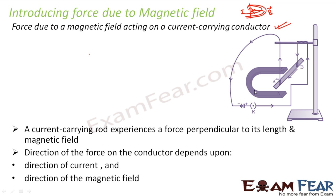If you place a magnet in the vicinity of this rod, the magnetic field produced around the rod will exert a force on the magnet, and the magnet in turn exerts an equal and opposite force on the rod. This is the force we are referring to as magnetic force. The current was flowing in a certain direction, with the north and south poles of the horseshoe magnet positioned such that the magnetic field was in the upward direction.